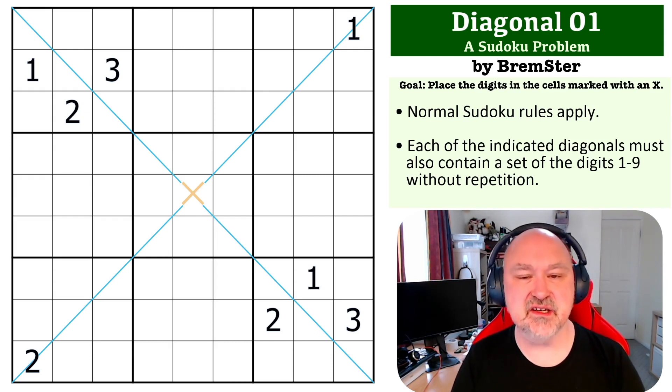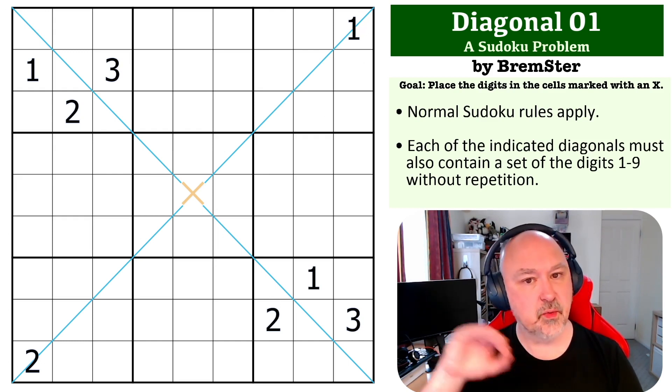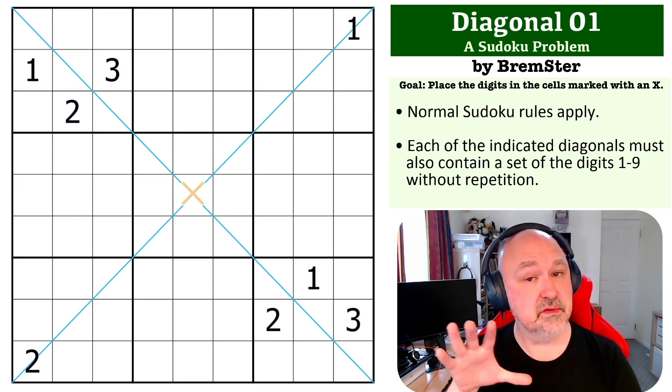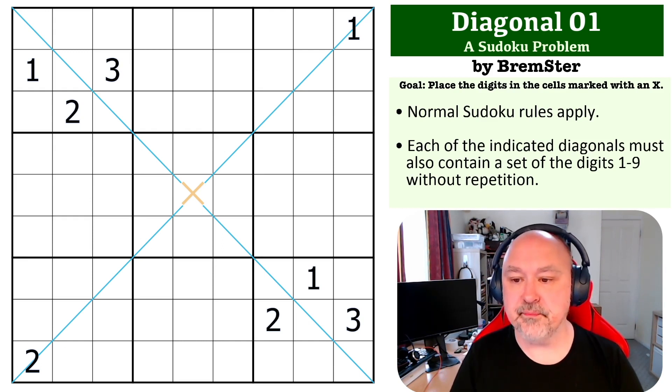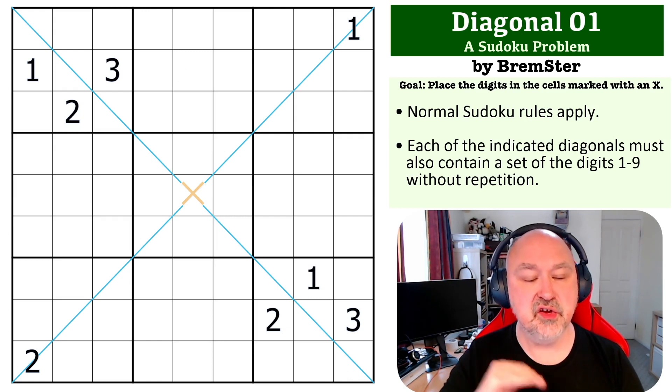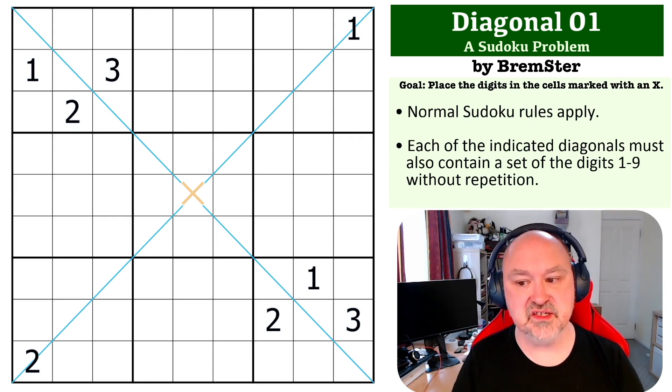This is a diagonal Sudoku problem and the way diagonals work is that along the indicator diagonals, so both what is called the positive diagonal and the negative diagonal, because that's the way they would go on a graph if you were to mark them off, you also cannot repeat the digits one to nine. So they must also contain a set of the digits one to nine without repetition, as well as the normal Sudoku rules.